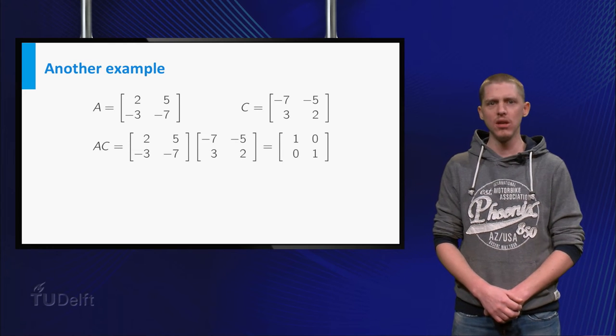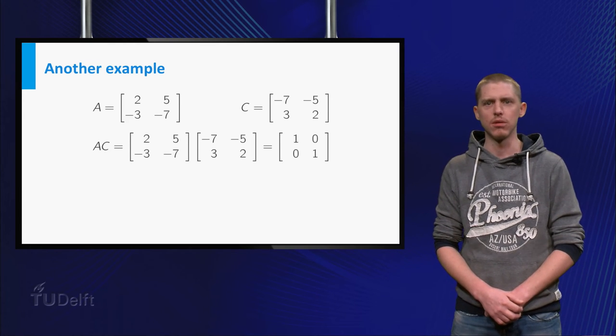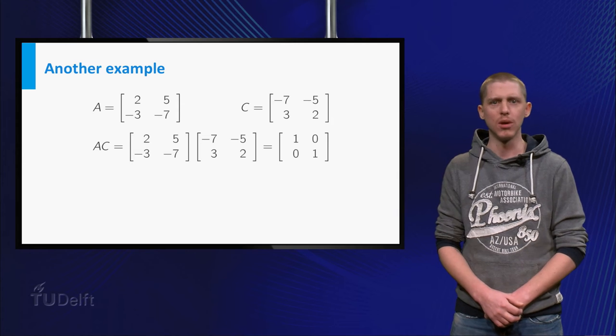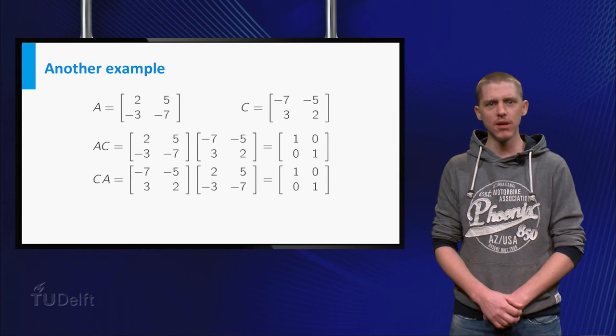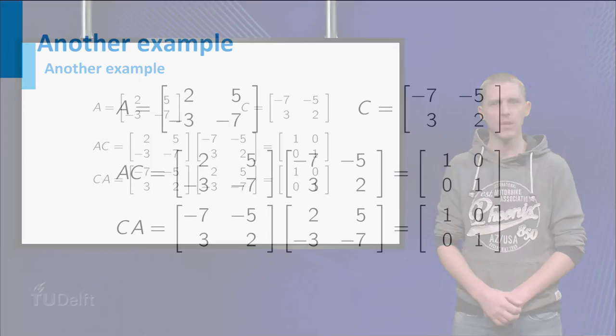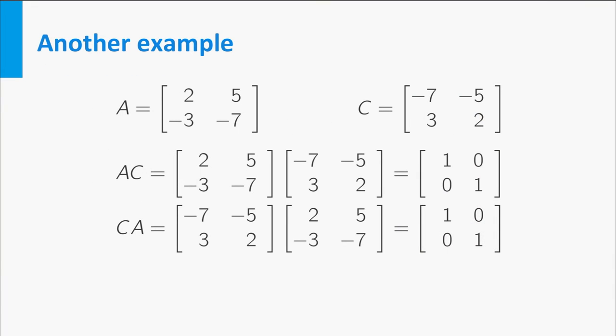We can calculate A times C, which gives us 1, 0, 0, 1, which is the 2 by 2 identity matrix. Calculating C times A again gives us the identity matrix. So according to the definition of the inverse, A is invertible and the inverse of A is C.